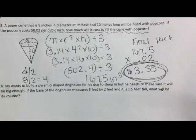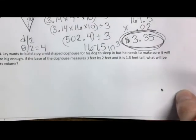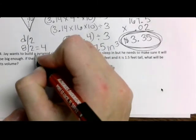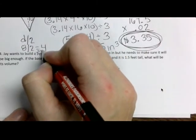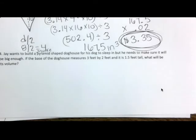So, then it says, Jay wants to build a pyramid-shaped doghouse. So, I'm going to add in here that this is a square pyramid.